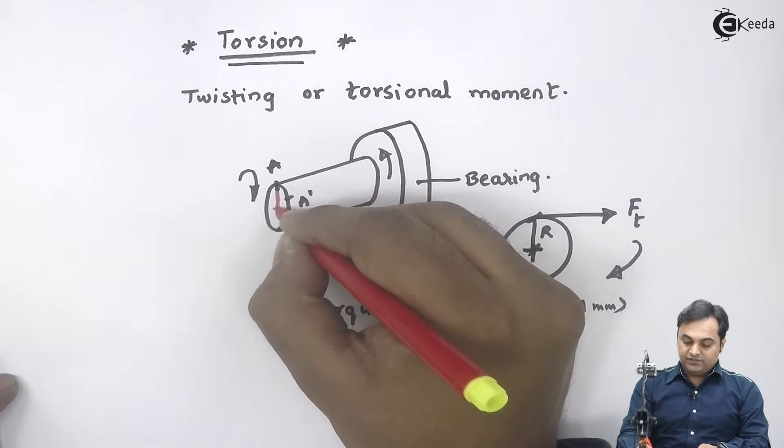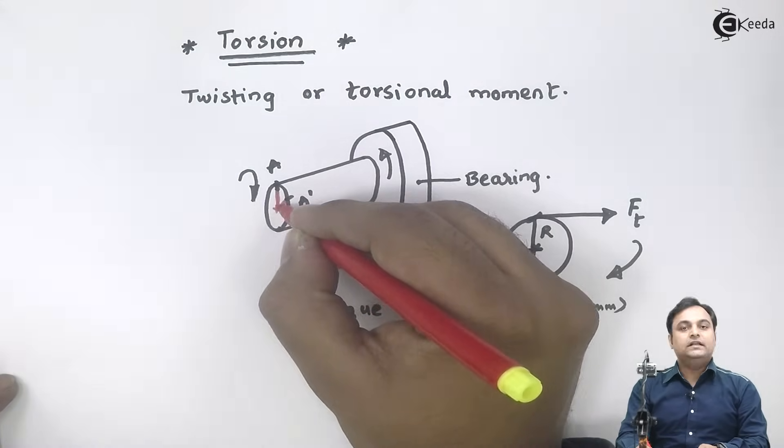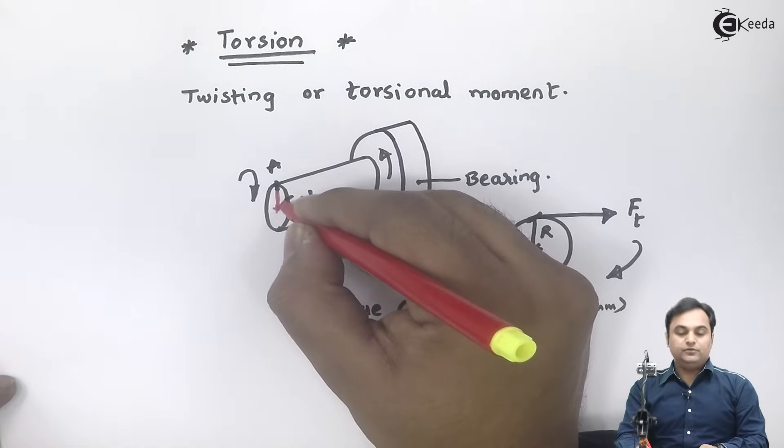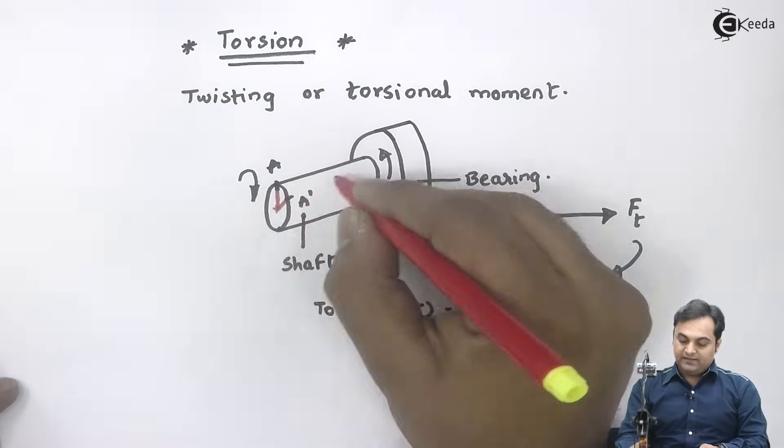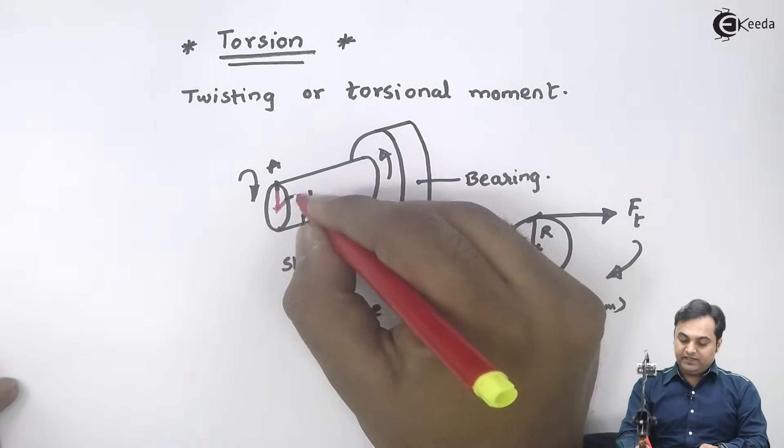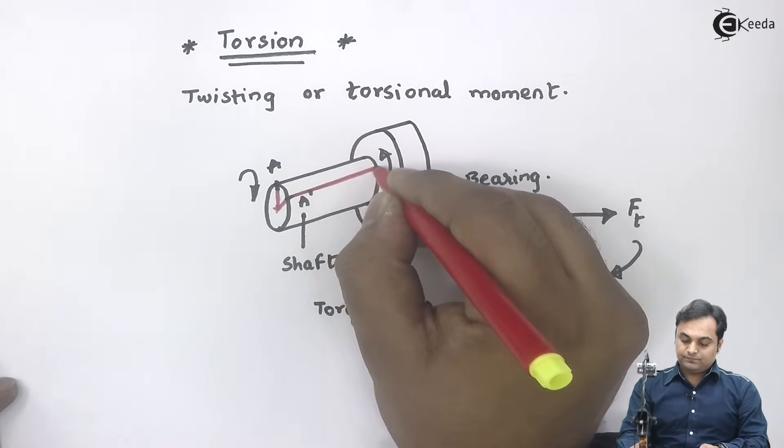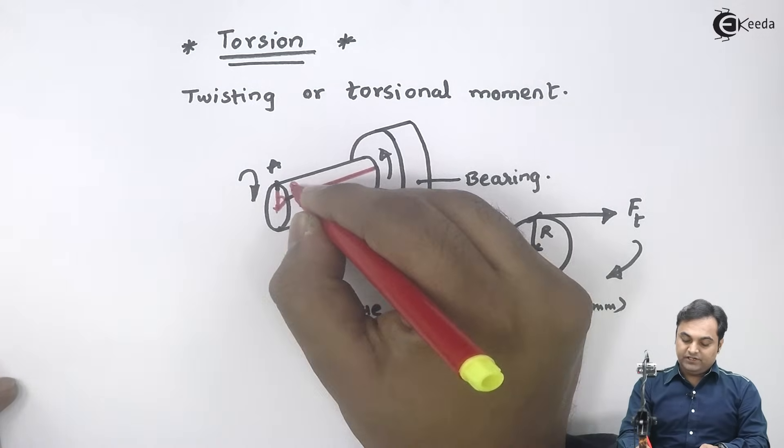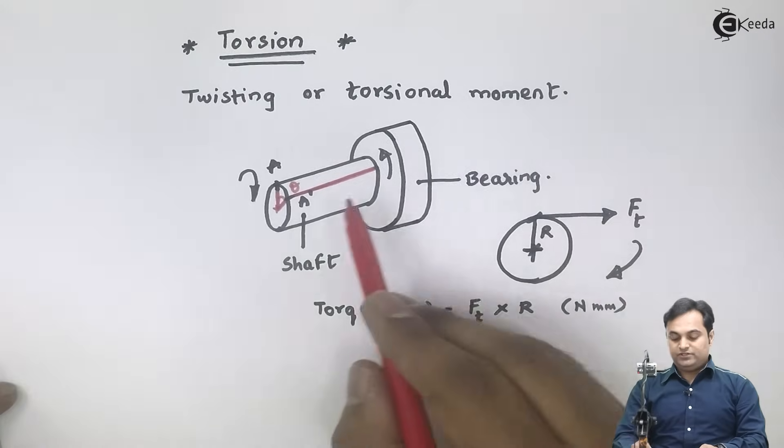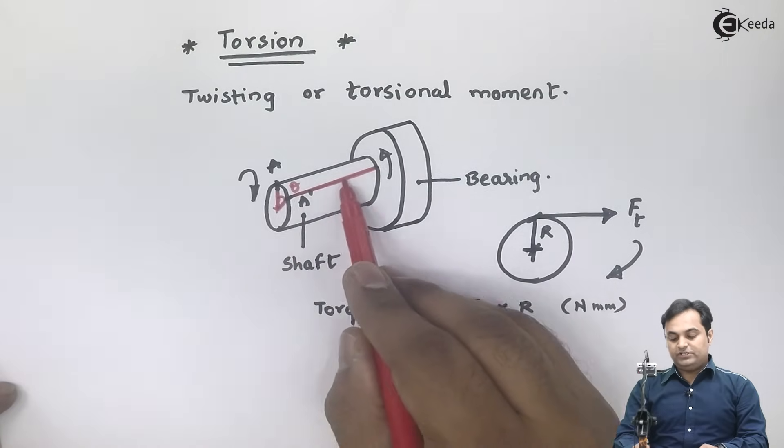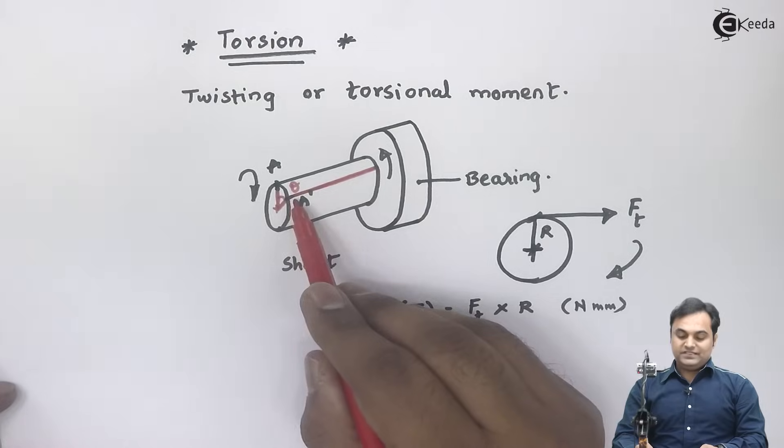And from the center of the shaft, if I consider this, here I have a small angle and this small angle would be called as theta, that is the angle of twist. And this angle of twist would be there all along the length of the shaft. So here I have theta which is the angle of twist which would be constant along the length.